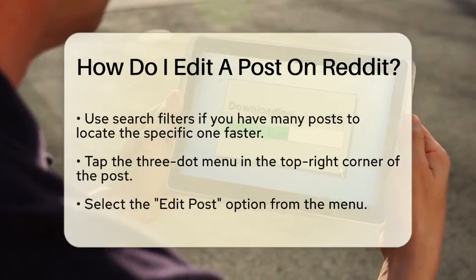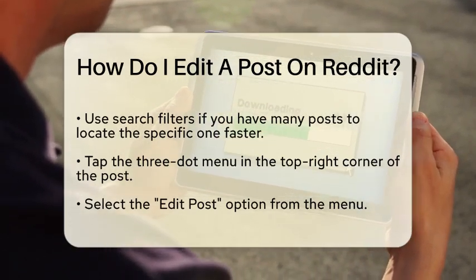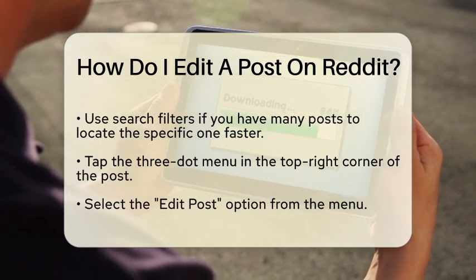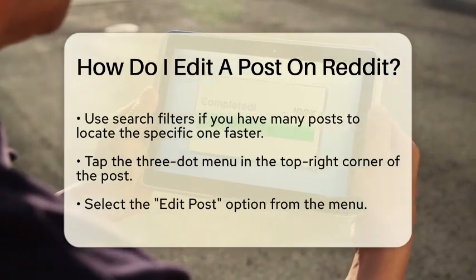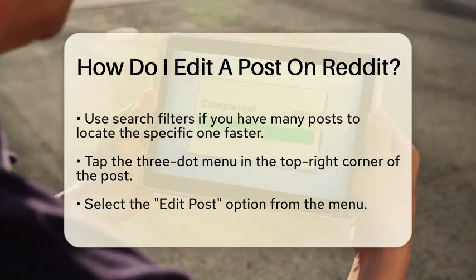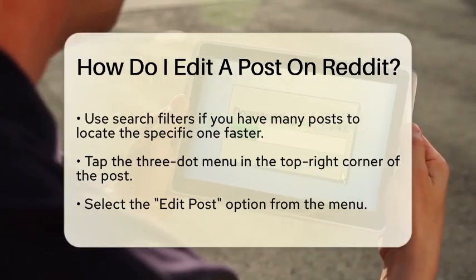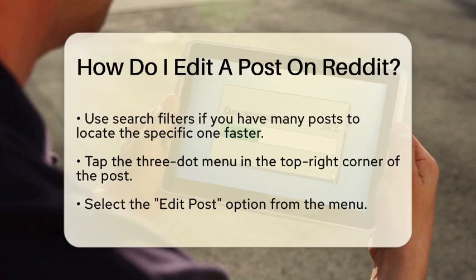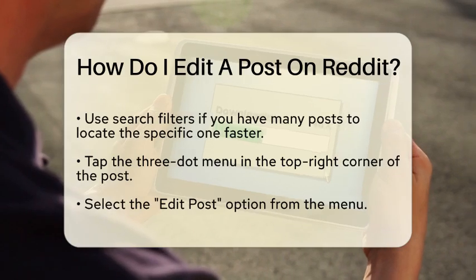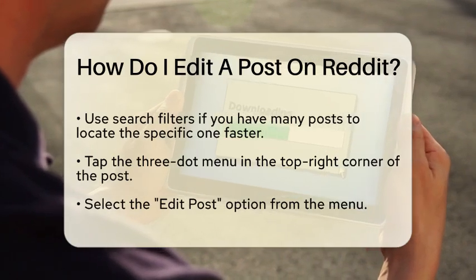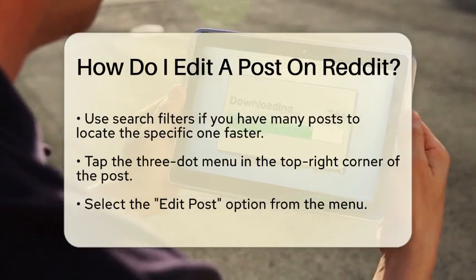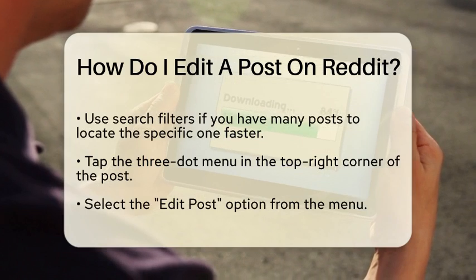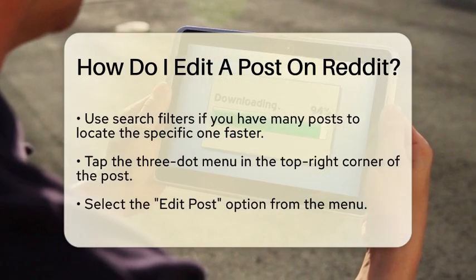Look for the three-dot menu, which is typically located in the top right corner of the post. Tapping this menu will reveal several options, including saving, sharing, and editing.